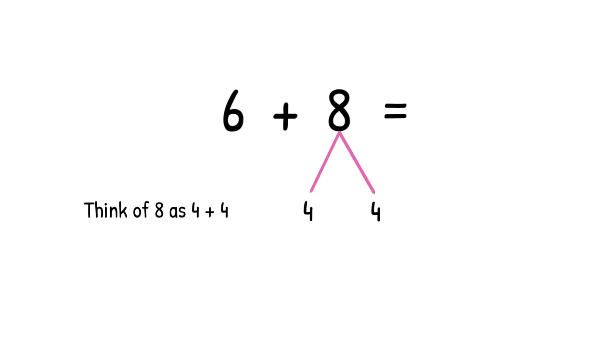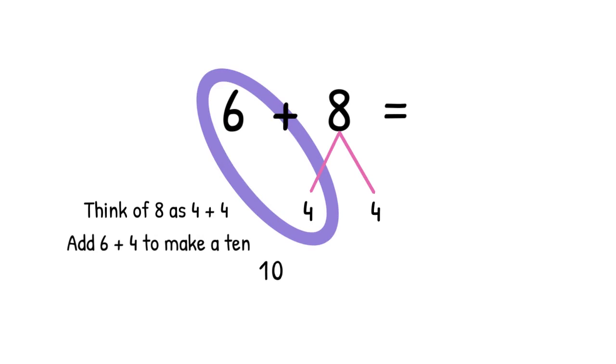I chose 4 plus 4 because I know my Make a Ten facts and I know that 6 plus 4 equals 10. Add 6 plus 4 to make a 10 and then add the 4 that's left over. 10 plus 4 equals 14. So, 6 plus 8 equals 14.